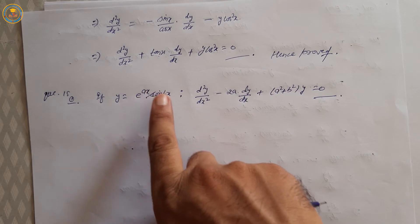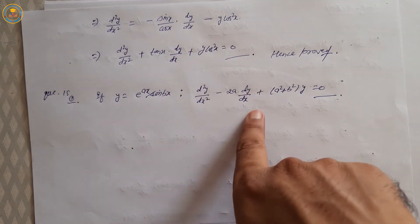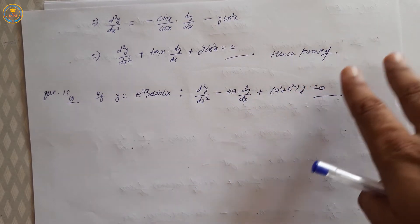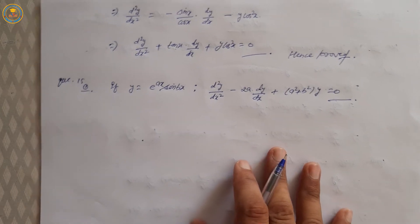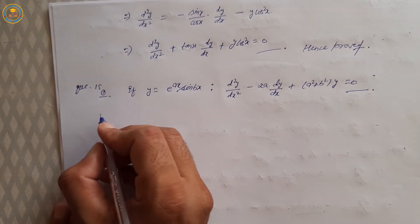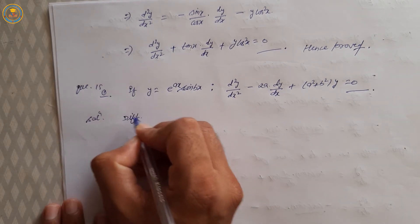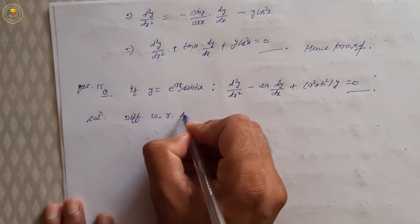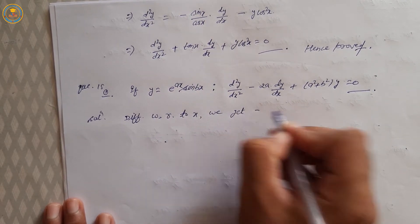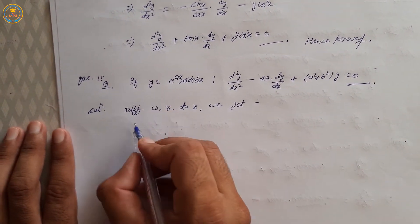If y = e^(ax) · sin(bx), then show that d²y/dx² − 2a · dy/dx + (a² + b²) · y = 0. Solution — differentiate with respect to x. We get dy/dx.